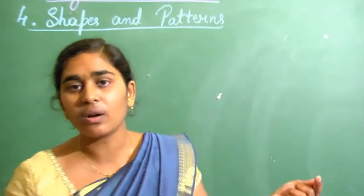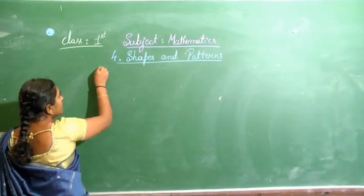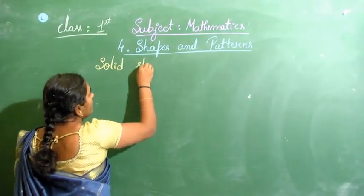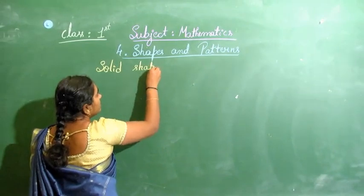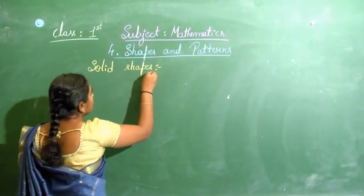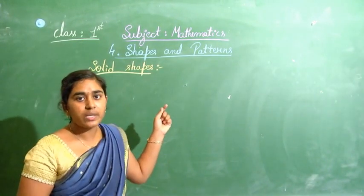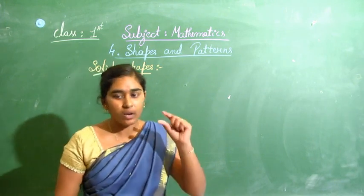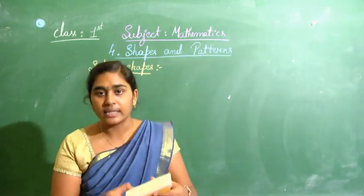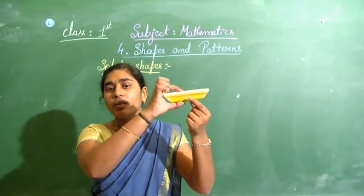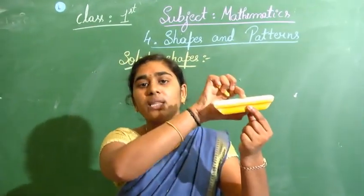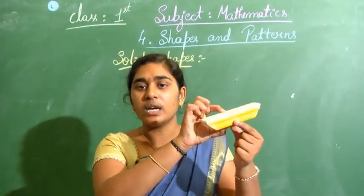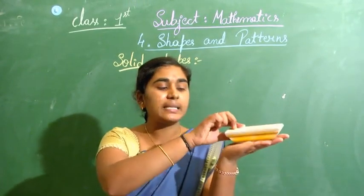There are other shapes which are called solid shapes. These solid shapes differ from the plain shapes by having a volume. If you see here it is very thick — that thickness is called volume, which takes up some space.